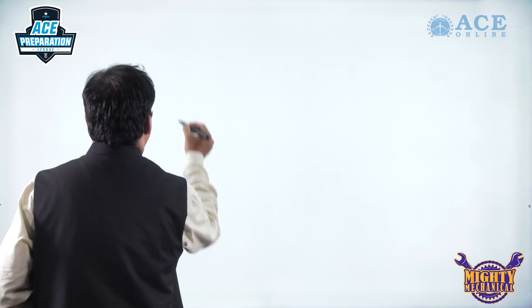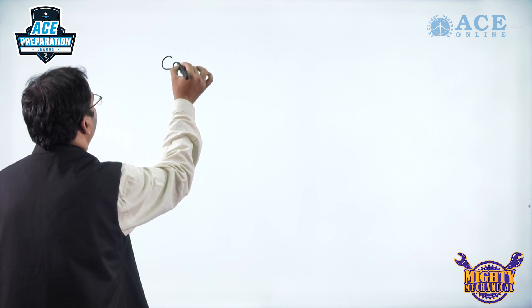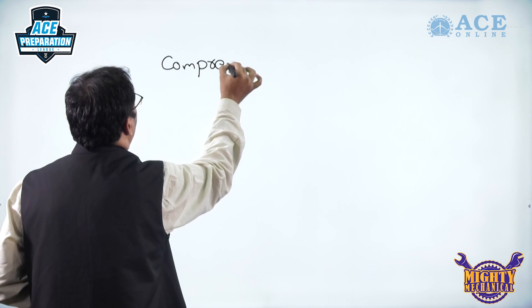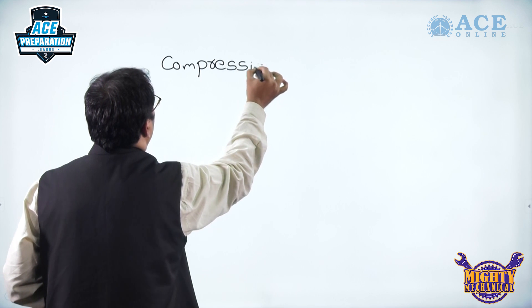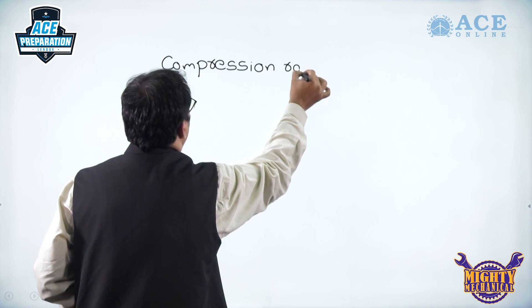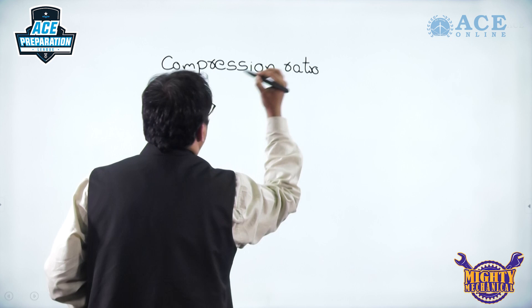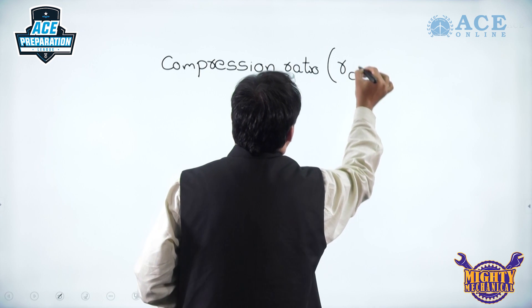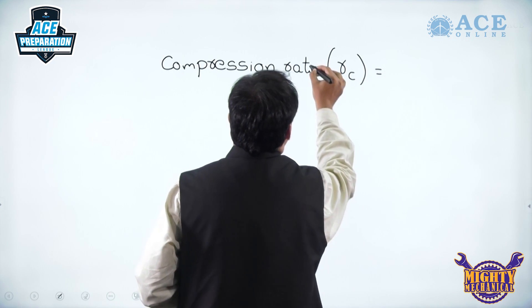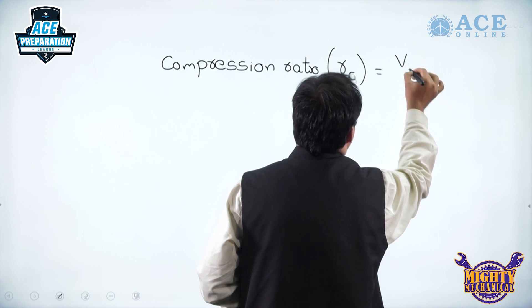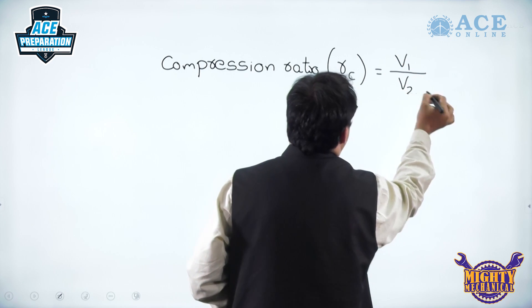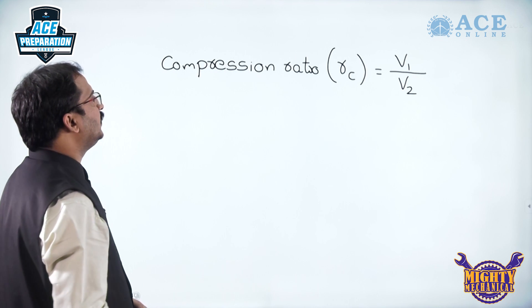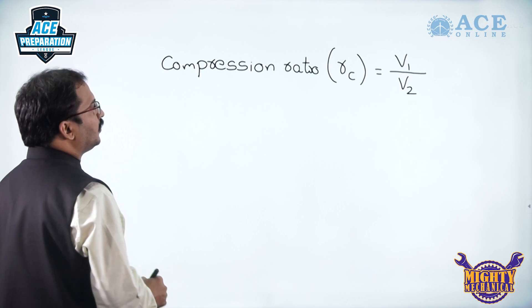The first ratio is compression ratio, denoted by R_C, which is the volume at the beginning of compression divided by the volume at the end of compression — so V1 by V2 is the compression ratio.